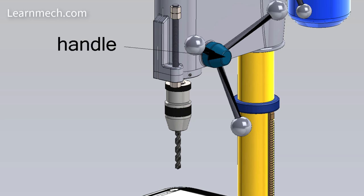This handle gives feed to the drill. The feed is along the axis of the drill, that is up and down.